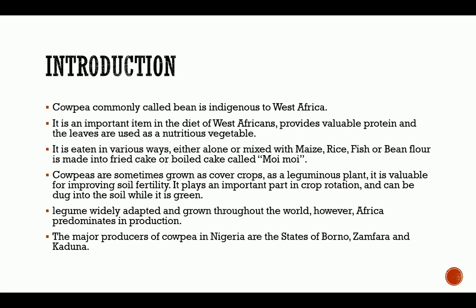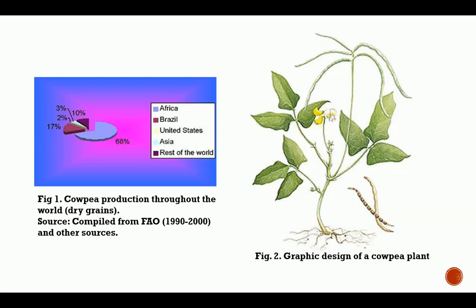This shows the production distribution of cowpea around the world. Africa has the highest production capacity at 68%, with the rest of the world accounting for 32% and 17% respectively.